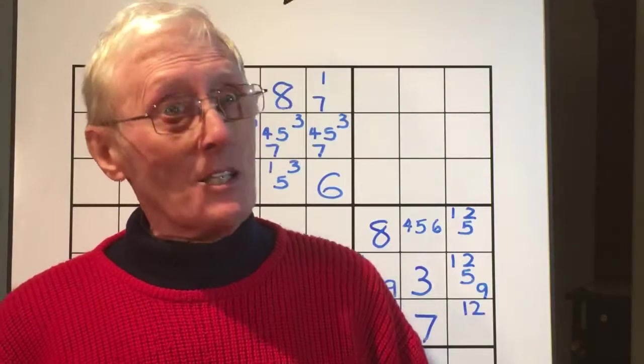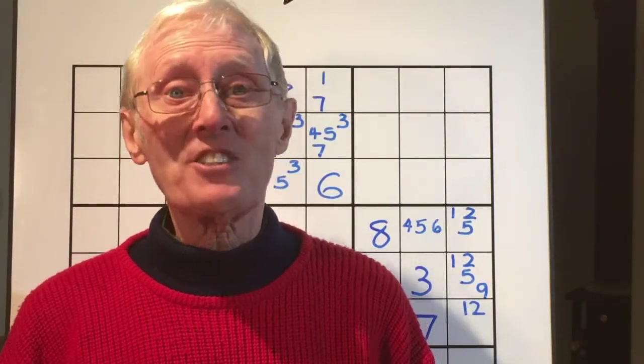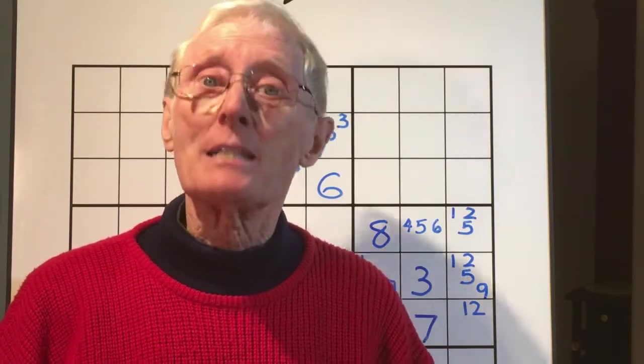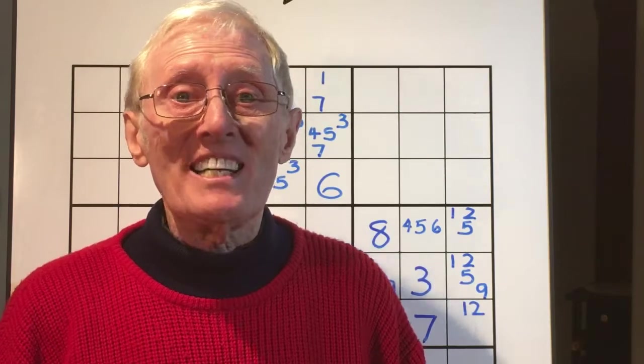Hello, this is Robin, the Sudoku guy again with yet another tutorial. This is number 24 and it's part B of Hidden Pairs.